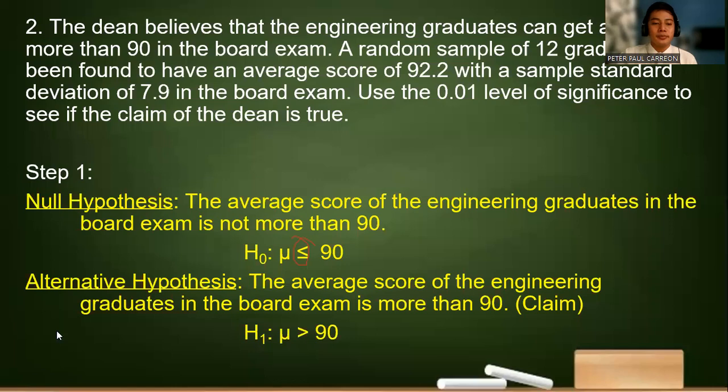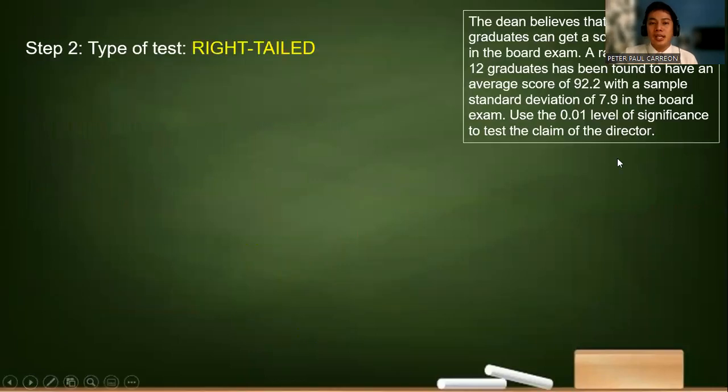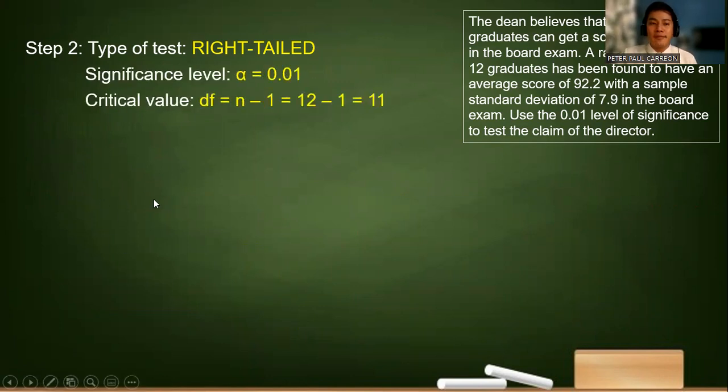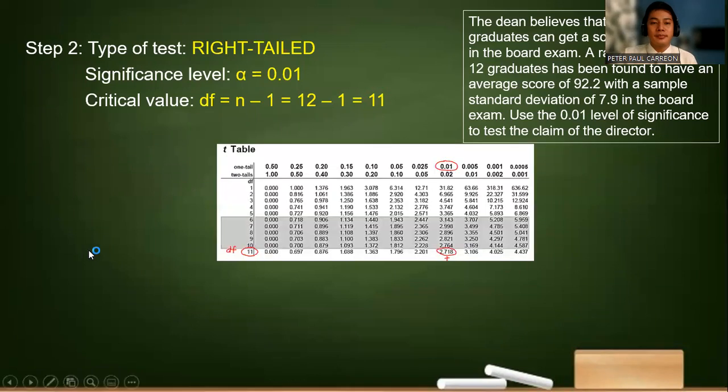Step number two. Obviously, this is a right-tailed test or a one-tailed test. The significance level is 0.01. That's our alpha. The critical values, using the degrees of freedom. So we will use a t-test. We should get your t-tables because the t-table gives us a value for 11 and then it intersects with 0.01 one-tailed. So the critical value is positive 2.718.